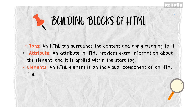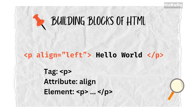Everything that we write between a starting tag and an end tag is known as an element — a pair of start and end tags together. For example, we have a tag with name 'p': p align='left' — here 'align' is the attribute and 'left' is the value. 'Hello world' is the content, and closing p is the end tag. From the starting p till end p, everything together is known as an element.